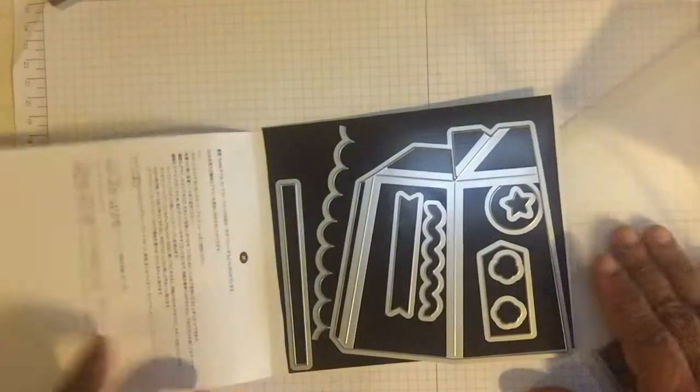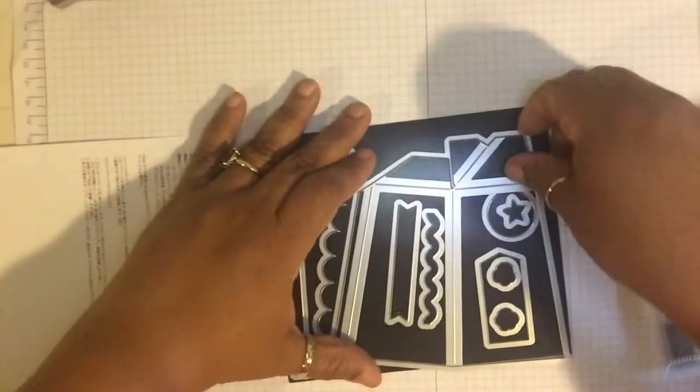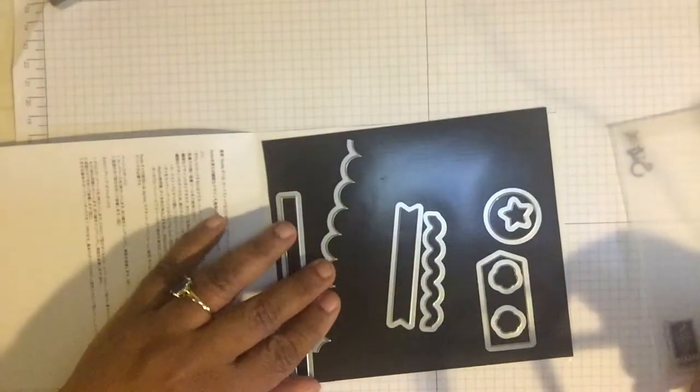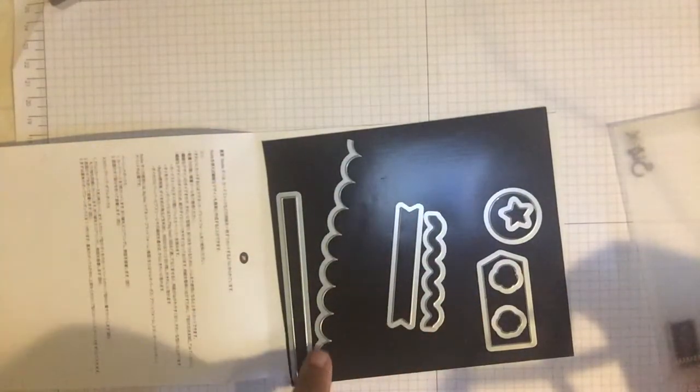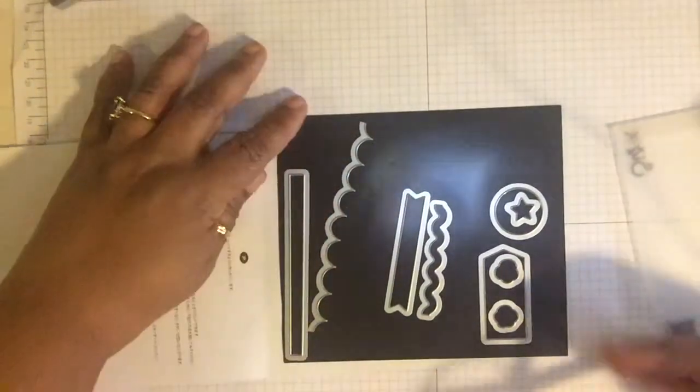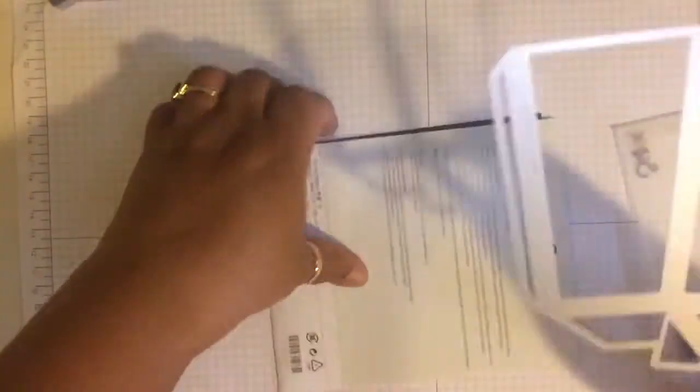Also what I'm going to be using is my treat box made from the Popcorn Box Thinlits. This is the set of Thinlits. The only thing that I'm going to use today is the actual box die. They have other embellishments where they have little popcorn and star circles. This is where you can make a scallop on the top of the box, but I'm not going to do that today.